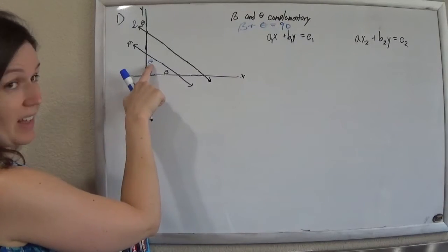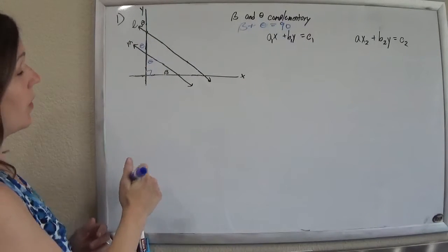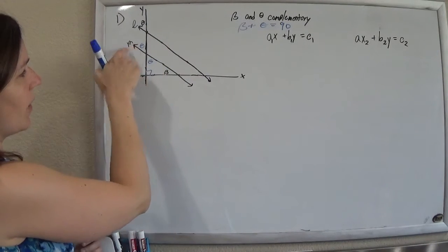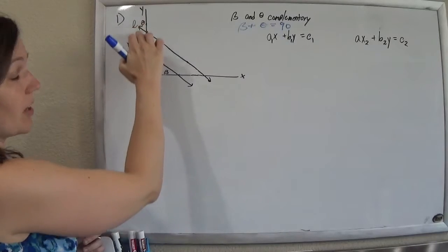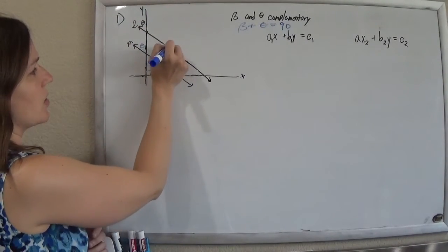So now that I know that that's theta, I can use vertical angles to say that that is theta also. And because now I have corresponding angles that are congruent, if corresponding angles are congruent, then the lines are parallel.